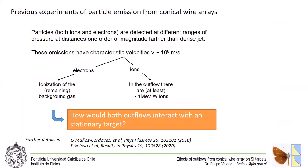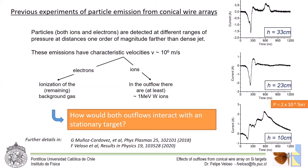So before showing the effects of the outflows on the silicon targets, I will shortly refer to the detection of the particle axial flow emitted axially from the conical wire array. Here on the left-hand side of the screen, you can see the measurement of particles using Faraday cups at distances much larger than the typical length selected for the dense plasma jet usually studied for astrophysical applications.